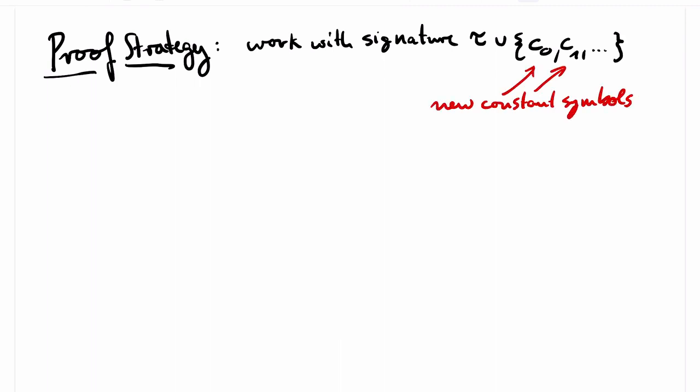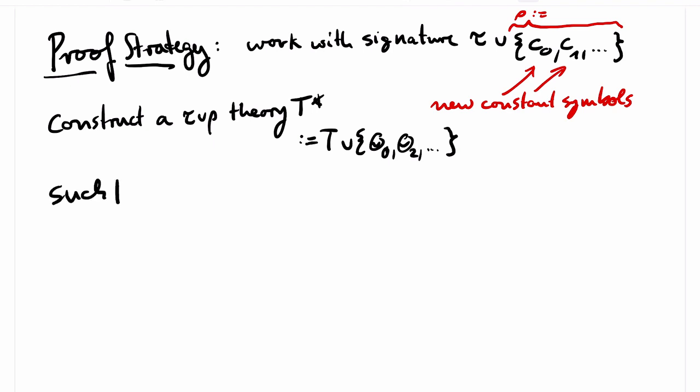Our proof strategy now is as follows. We will work with a larger signature that contains countably many new constant symbols. That is, constant symbols that do not appear in tau. Let rho be the set of all the new constant symbols. We now construct the tau union rho theory T star, which contains T and countably many new sentences theta 0, theta 1, and so on, and has the following properties.